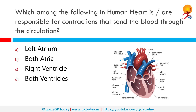Which among the following in the human heart is or are responsible for contractions that send blood to circulation? The correct answer is both the ventricles. During the contraction of the ventricles, the ventricles interact with the atria as well as with the pericardium and the surrounding tissue in which the heart is embedded. The atria are stretched and the atrioventricular plane moves towards the apex.